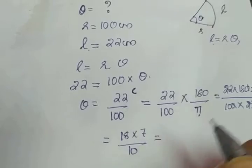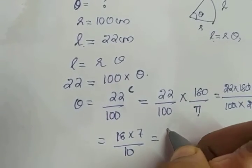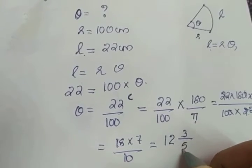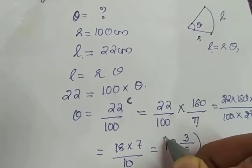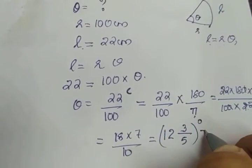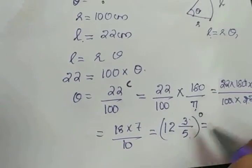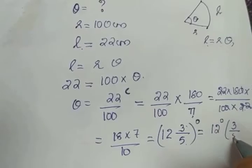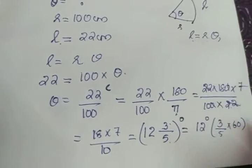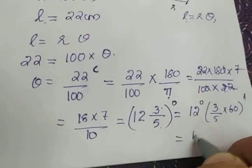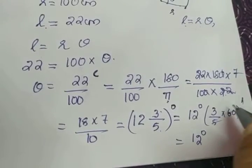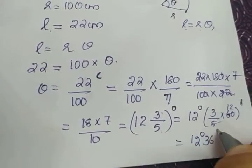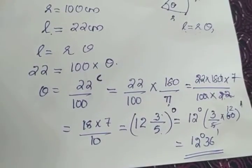Simplifying 18 × 7 / 10 = 126/10, which as a mixed fraction gives 12 and 3/5 degrees. To convert 3/5 of a degree to minutes, we multiply 3/5 × 60 = 36 minutes. So the final answer is 12 degrees 36 minutes.